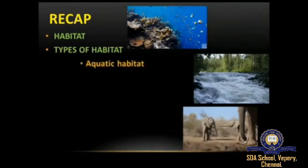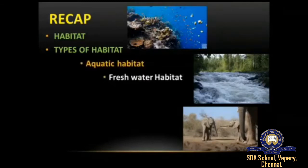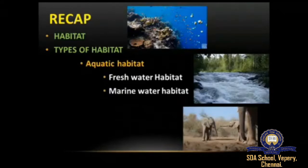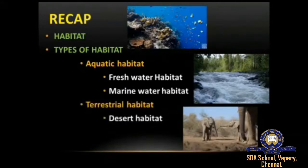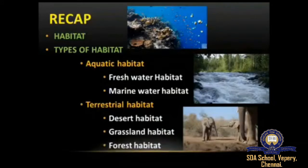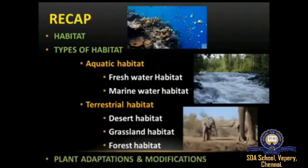The first type is the aquatic habitat. In aquatic habitat we looked into what is freshwater habitat and marine water habitat. Next we moved on to the second type, the terrestrial habitat. In terrestrial habitat we saw what is desert habitat, grassland habitat, and forest habitat. At last we looked into plant adaptations and their modifications.